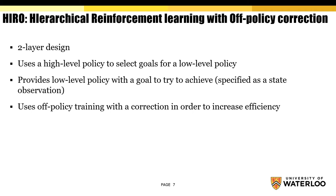This paper introduces HIRO, or Hierarchical Reinforcement Learning with Off-Policy Correction. This algorithm is a two-layer design with a high-level policy and a low-level policy. The high-level policy selects goals for the low-level policy to try to accomplish, and these goals are implemented as a state observation which the high-level policy would like to see. It uses an off-policy correction in order to increase sample efficiency.